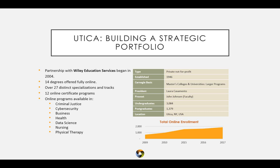Utica College has been building a strategic portfolio of online offerings for some time. We have partnered with Wiley Education Services since 2004 and currently offer 14 degrees fully online with 27 distinct specializations and tracks. We have 12 online certificate programs, and our programs range from criminal justice to allied health, cybersecurity, and data science. As a nonprofit institution with just over 5,000 students, working with Wiley has helped us place ourselves solidly in the market.